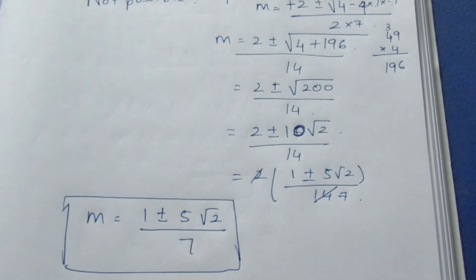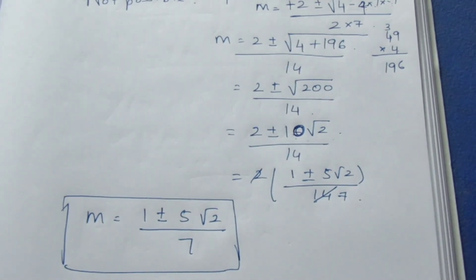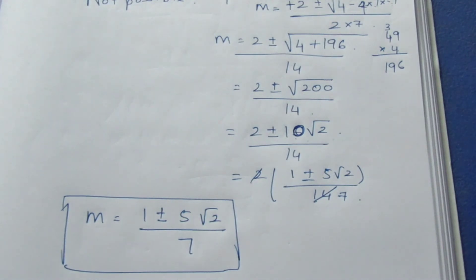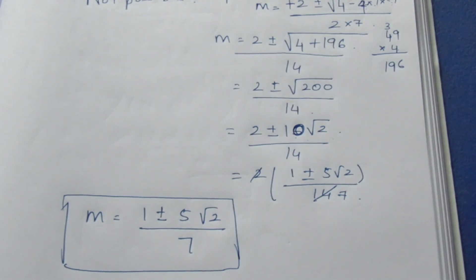We have two values: m = (1 + 5√2) / 7 and m = (1 − 5√2) / 7. This is your final answer for the sum. That's all. Thank you.